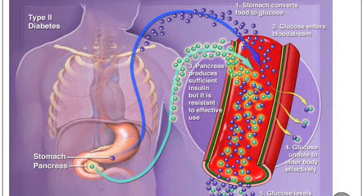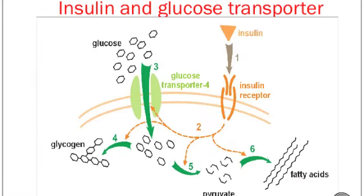Insulin is the major hormone in glucose metabolism, but at the molecular level insulin cannot work by itself. As seen in this picture, insulin causes glucose transport molecules such as GLUT4 to be inserted into muscle and adipose tissue cells, then glucose is taken up into those tissues lowering the blood glucose concentration. There are also other proteins that involve glucose metabolism.